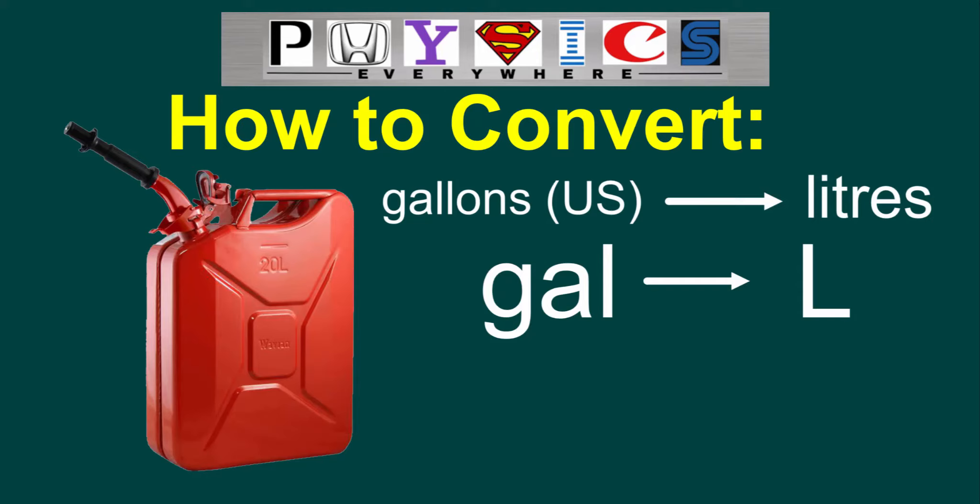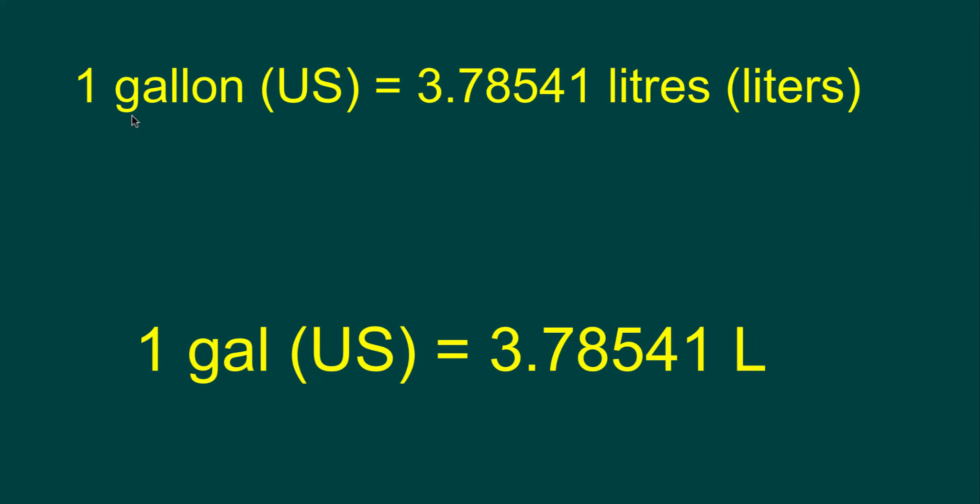For this video we're going to be looking at converting U.S. gallons into liters. One U.S. gallon is equivalent to 3.78541 liters.